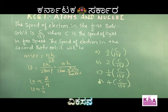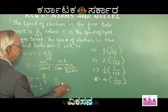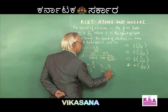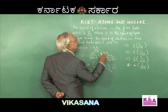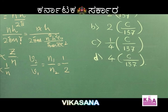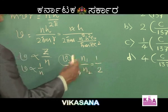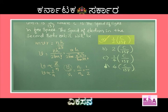The speed of electron in the first orbit is given as c/137. We want the speed in the second Bohr orbit. We write v₂/v₁ = n₁/n₂. With n₁ = 1 and n₂ = 2, and v₁ = c/137, we get v₂ = (1/2) × (c/137). So the correct choice is A, which is c/274.